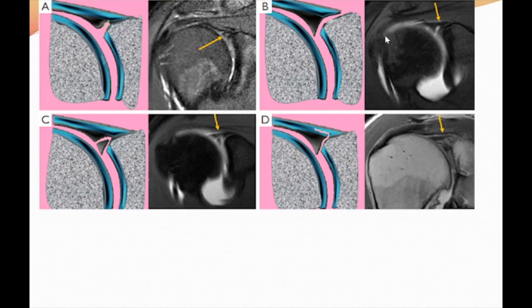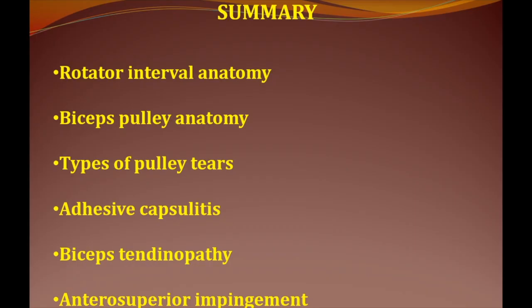Lastly, SLAP tears are of many types. The labral tear extending into the biceps, or type four tears, fall under part of pathology of the rotator interval. I am not going into details in this tutorial.